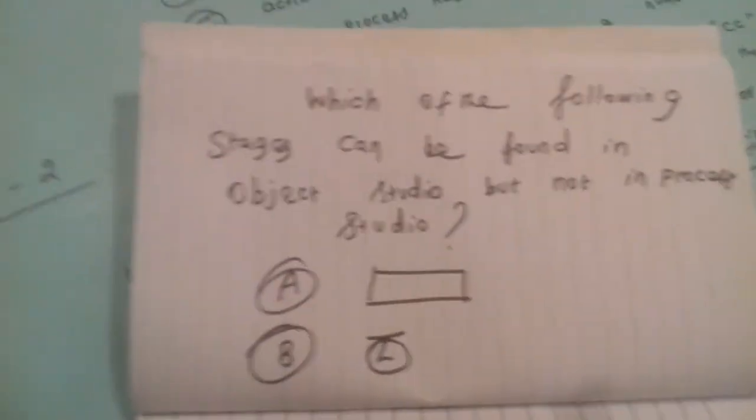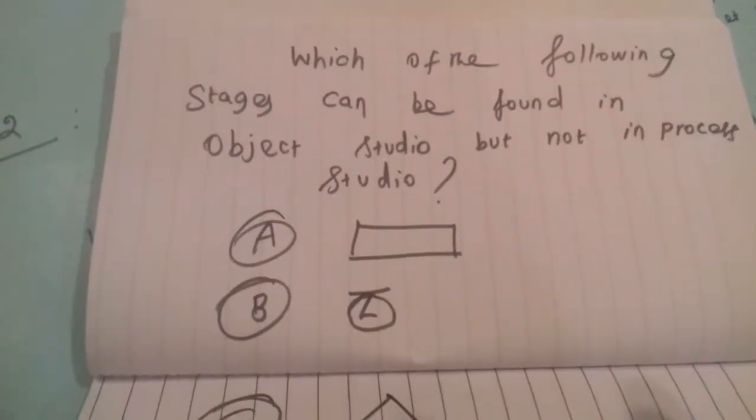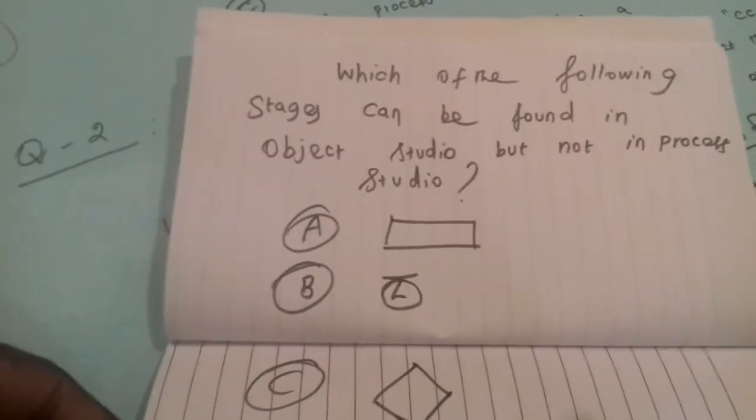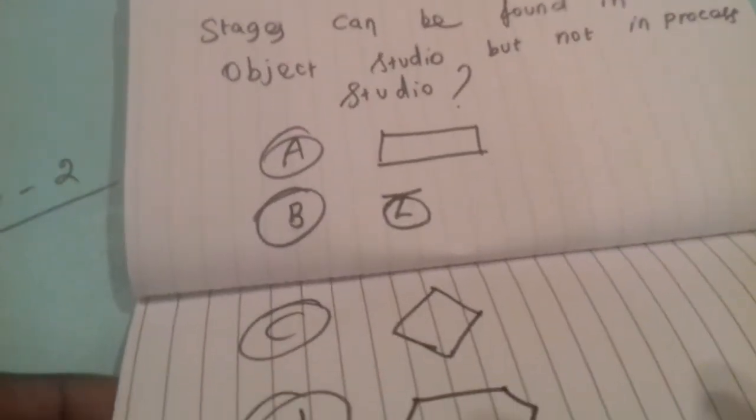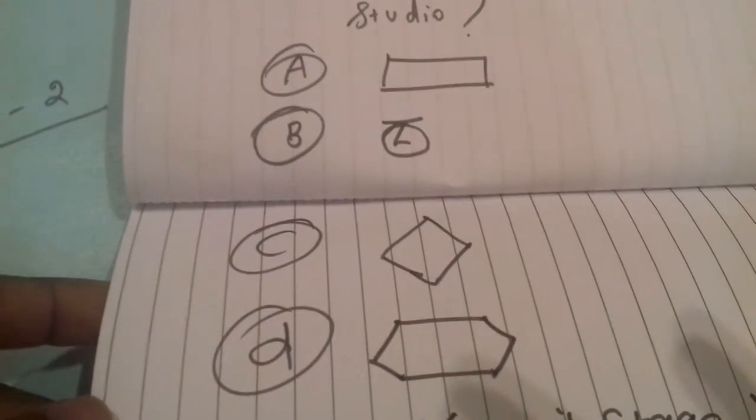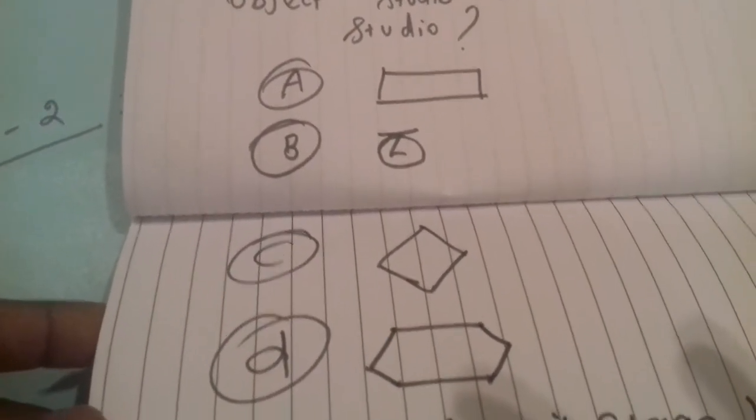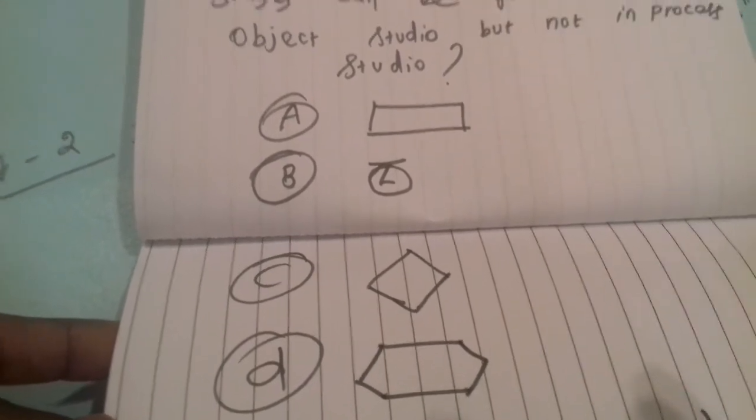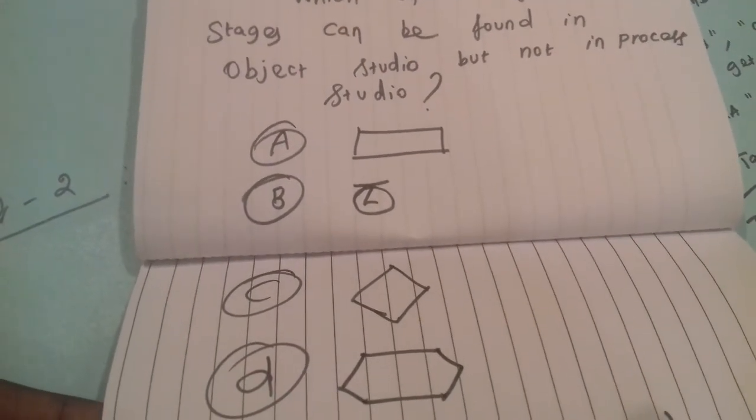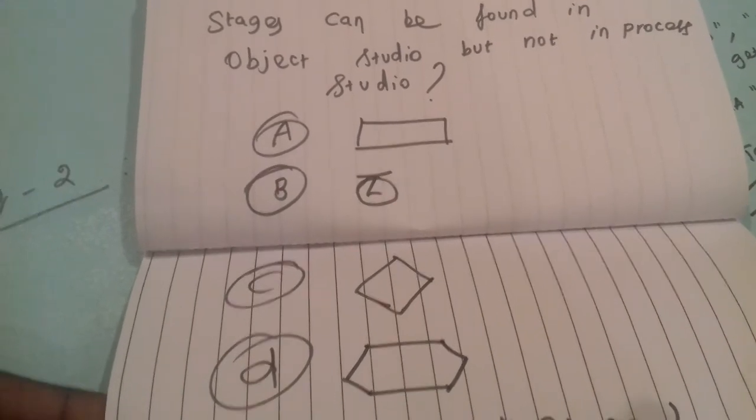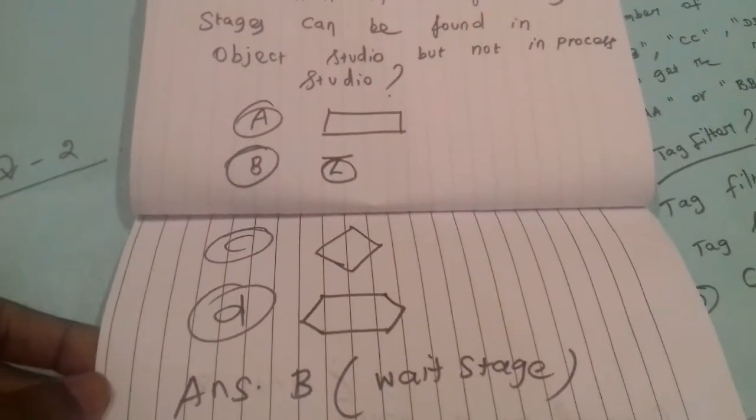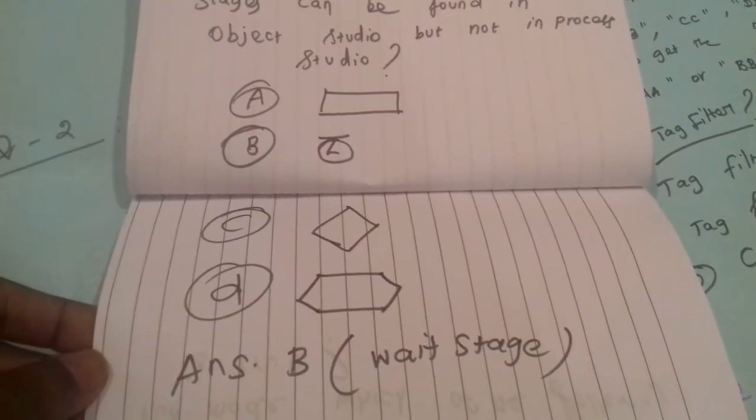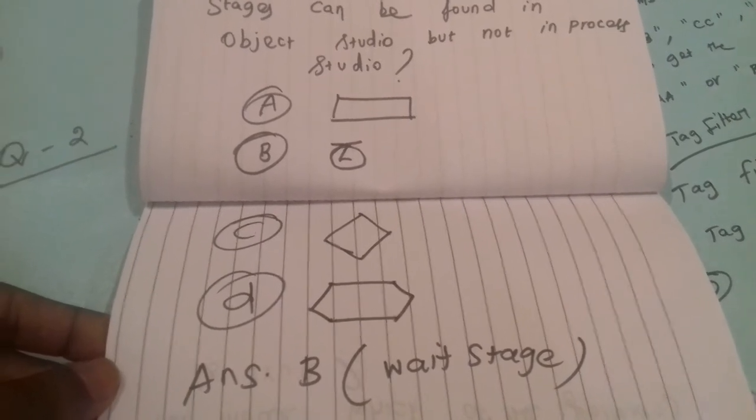Which of the following stages can be found in one but not in the other? They are providing four symbols A, B, C, D. The correct answer is B, wait stage. Wait stage is in object studio but not in process studio.